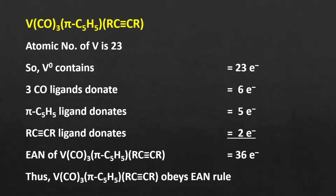The charge on the complex is 0. So, 23 electrons from vanadium, 6 from 3 carbonyl ligands, and 5 from cyclopentadienyl. The sum of these electrons is 34. As we know, an alkyne ligand is flexible and can donate either 4 or 2 electrons depending on the complex requirement to show stability. Therefore, here the alkyne will act as a 2 electron donor to make this complex stable, giving an EAN of 36.